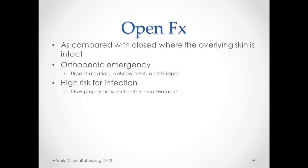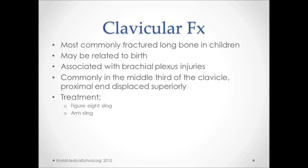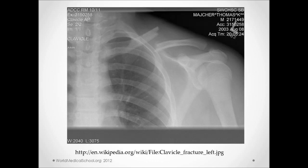Moving on to fractures common in children. Clavicle fractures are the most commonly fractured bone in children. They may be related to birth, especially in large infants, and can be associated with brachial nerve palsies. They usually involve the middle third of the clavicle, with the proximal fragment displaced superiorly due to the pull of the sternocleidomastoid. Treatment includes figure-eight slinging or a typical arm sling.